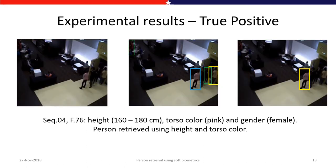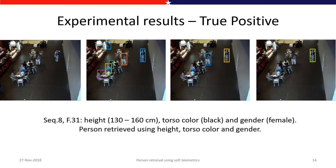This result shows person retrieval using both height and torso color. The middle image shows bounding boxes around persons matching the height query, and the last image on the right shows only the person with a pink torso color. In the next example, all three queries are useful — the third image shows persons with the same torso color and height, but one is female and one is male, so the female can be further retrieved using the gender model. The final image shows the female with height 130 to 160 centimeters, torso color black, and gender female.